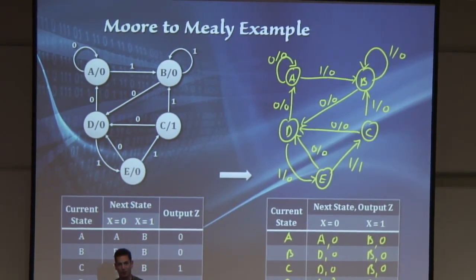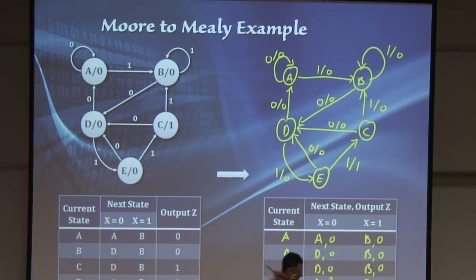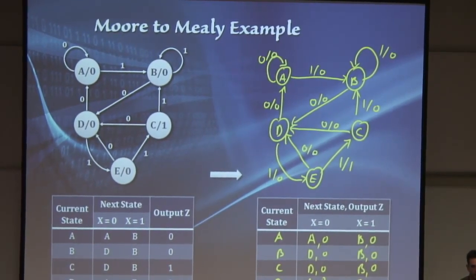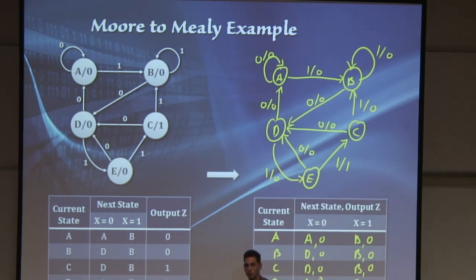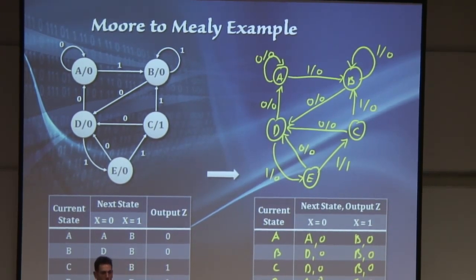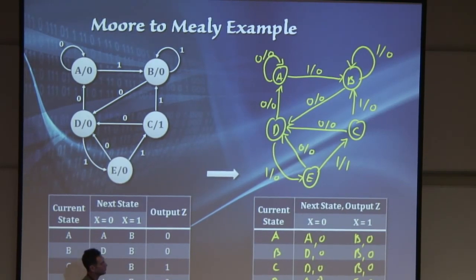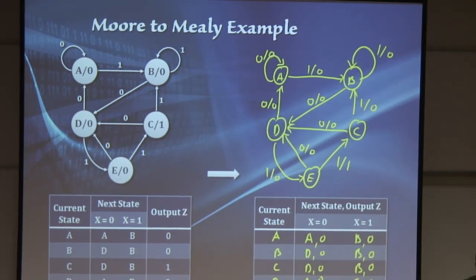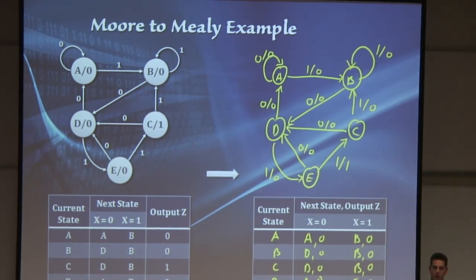This relates to timing: in a Moore machine, the output will only be updated as soon as the state gets updated. But in a Mealy machine, the output is also dependent on the input, and you can't guarantee the input will only change at clock edges. States change at clock edges due to the nature of the flip-flop, but the external input might change before or after the clock edge — so your output can change at somewhat asynchronous times. It's not usually a problem if you only sample the output at certain clock edges, but functionally they are equivalent.